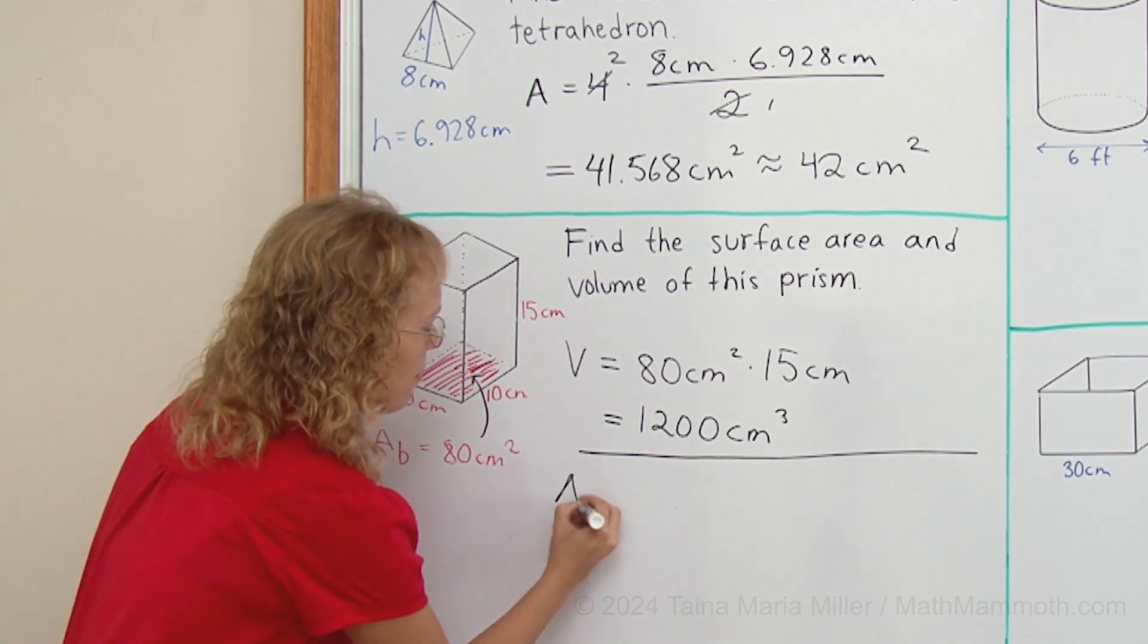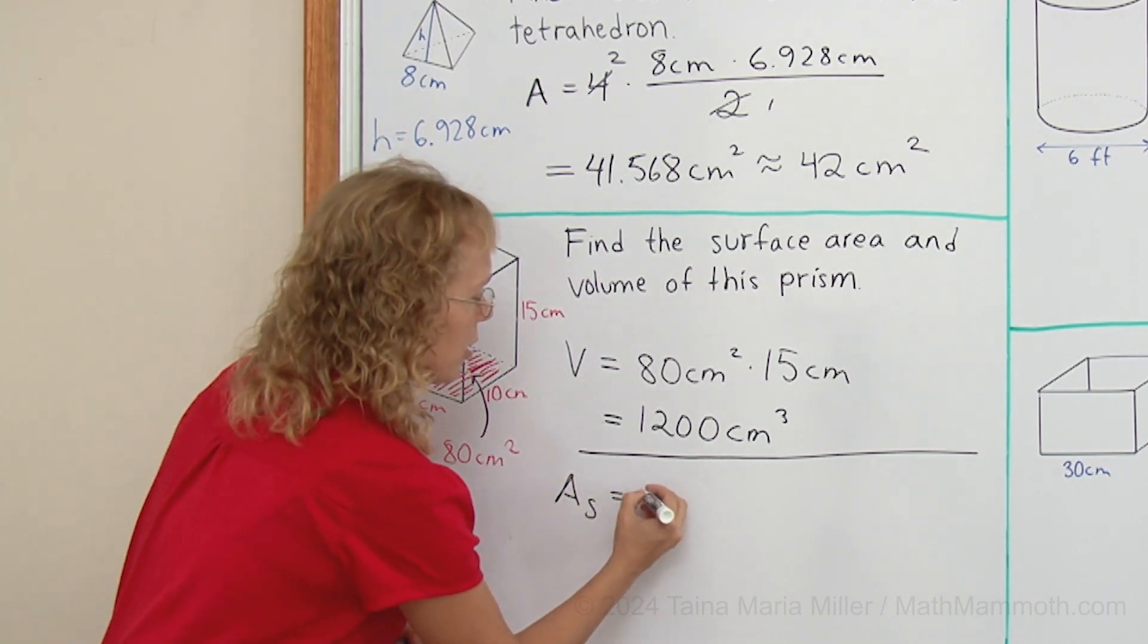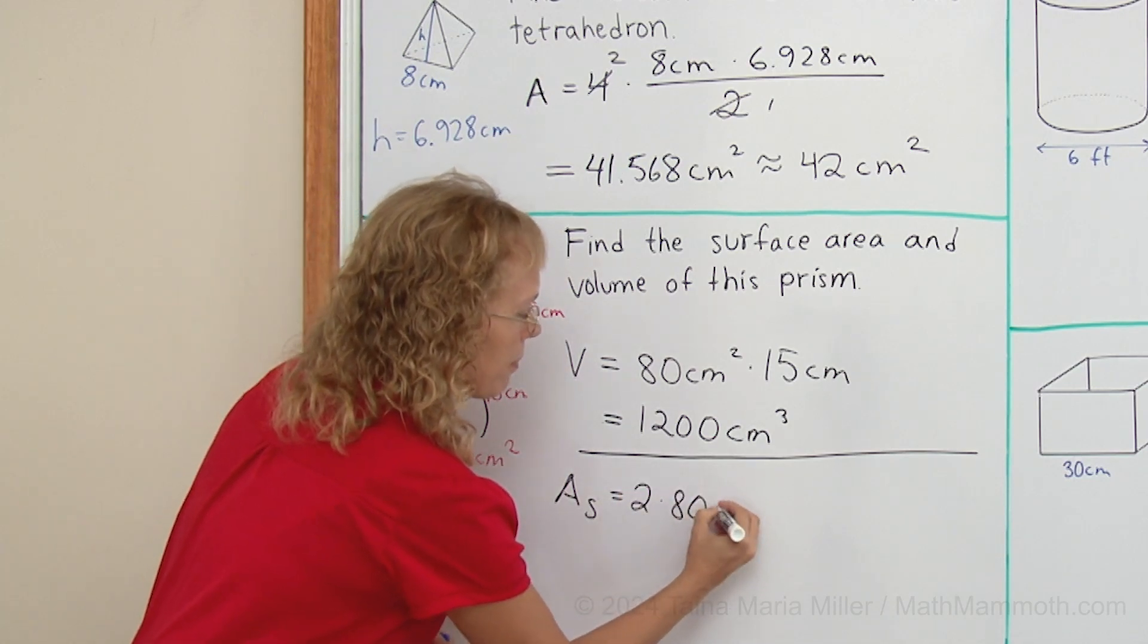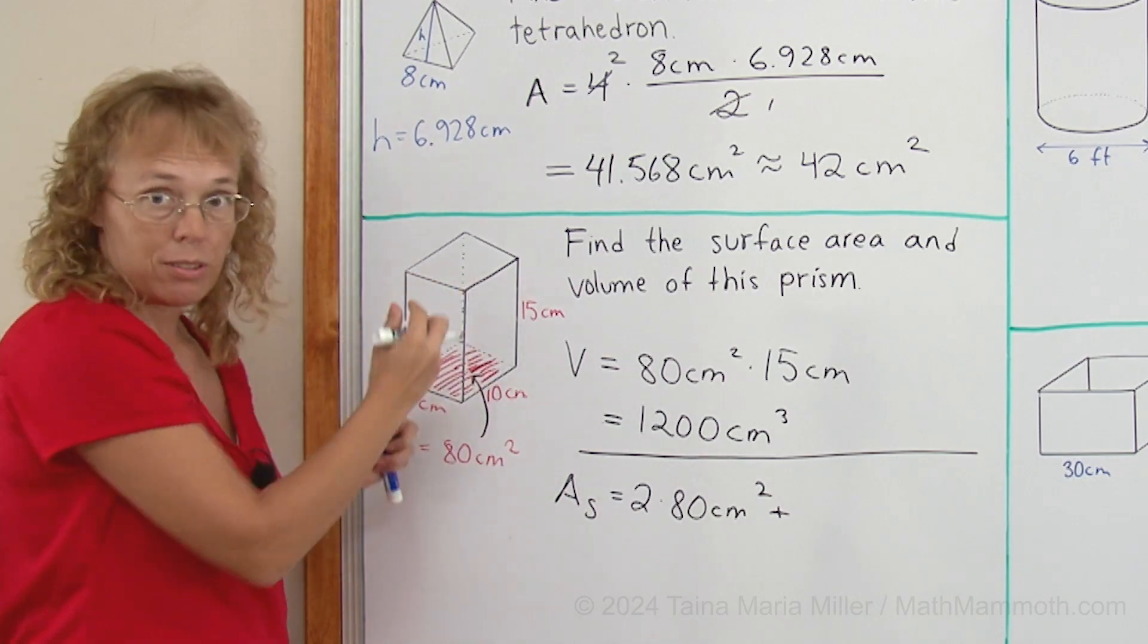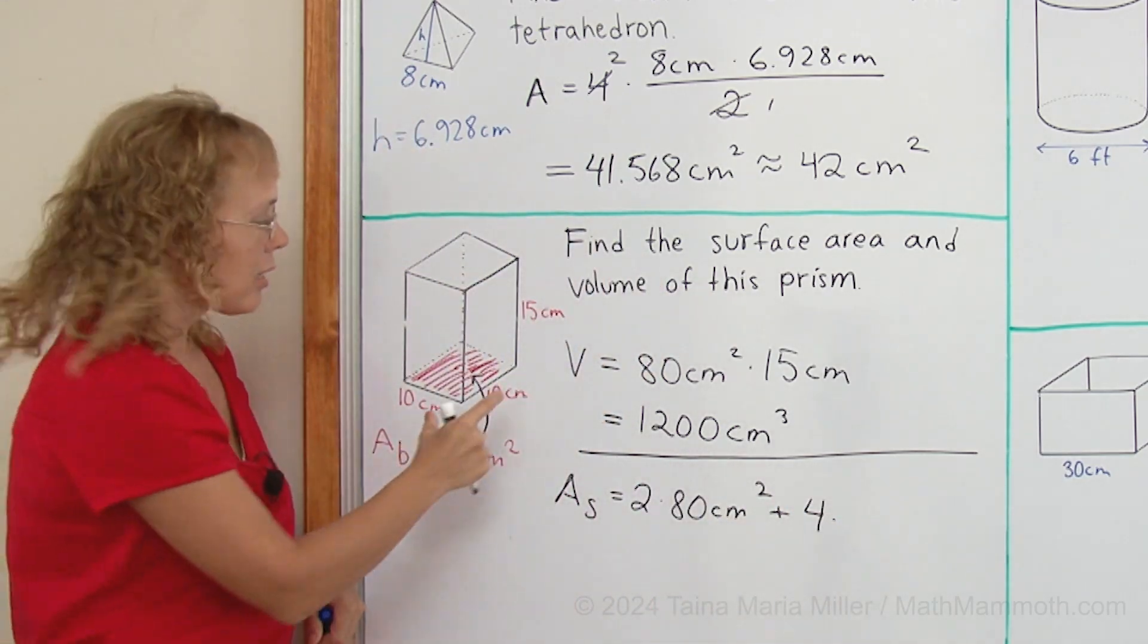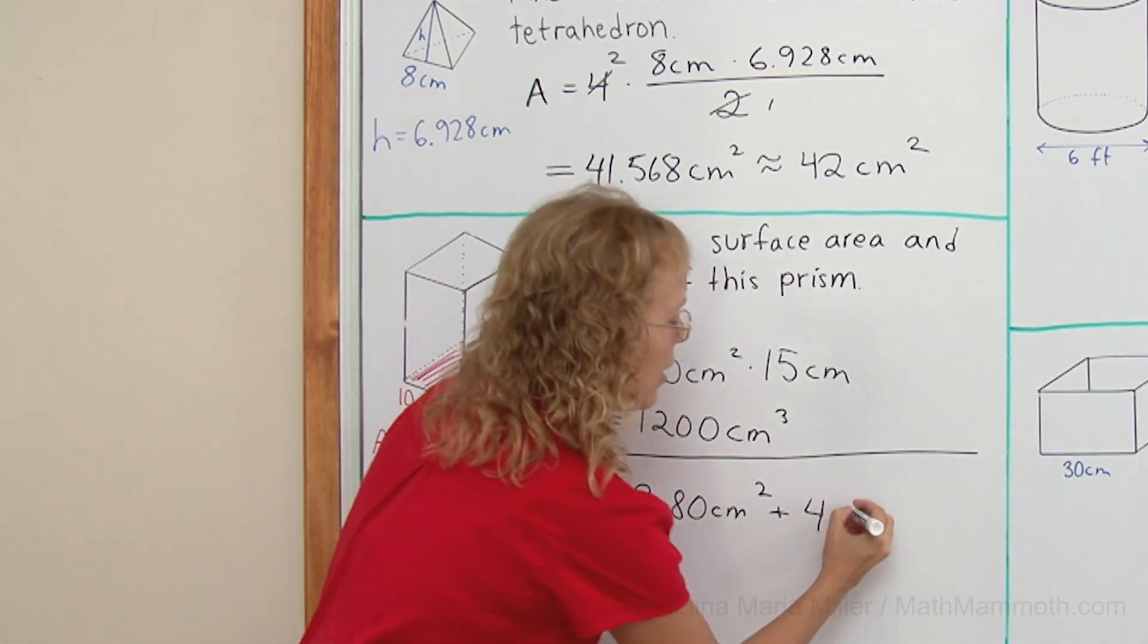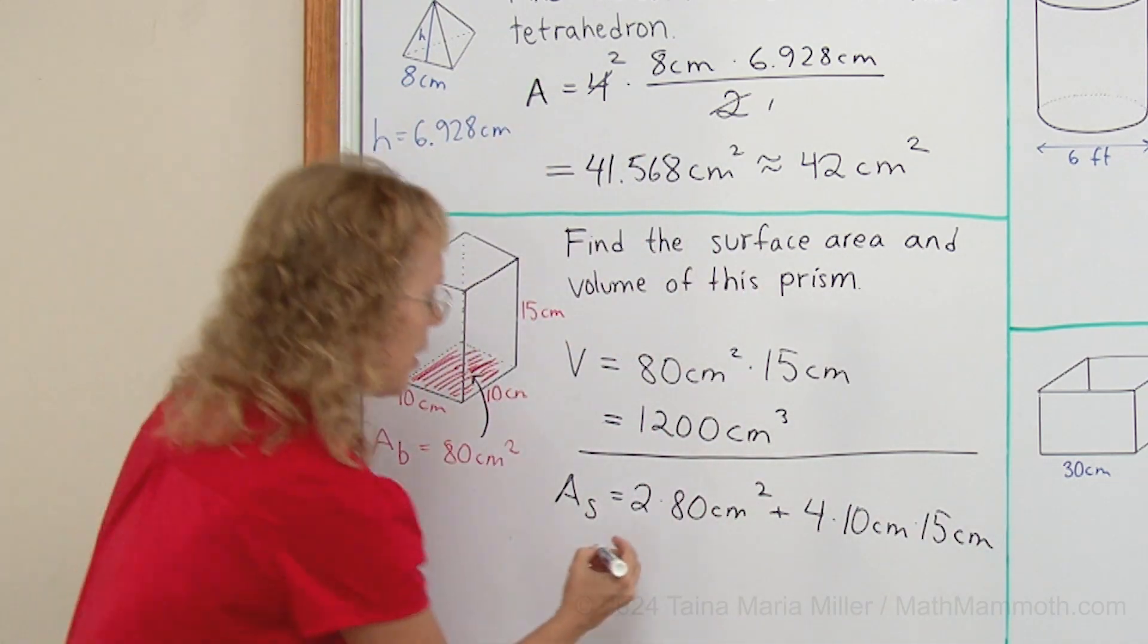Okay, so for the surface area, we would get the top and bottom. So there's 2 times 80 square centimeters. And then we have the 4 rectangles, 4 times. And 1 rectangle is 10 times 15, 10 centimeters times 15.